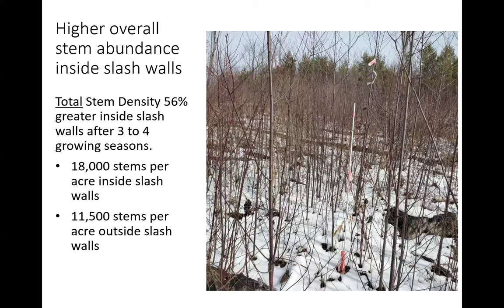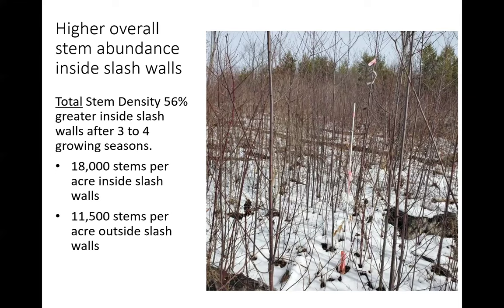Looking at all stems combined — irrespective of height or whether exposed or shaded — there is 56% greater density of stems inside slash walls after three to four growing seasons than outside. Inside we see about 18,000 stems per acre; outside about 11,000 stems per acre. The picture shown is from the Red Pine harvest, which was essentially a clearcut overstory removal — that's why it shows a high-density seedling stand.